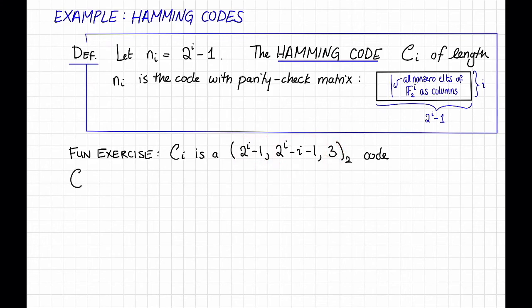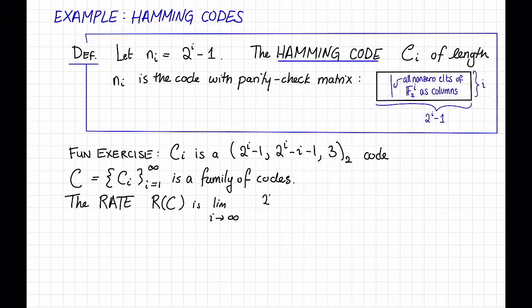That is, it has block length 2^i - 1, dimension 2^i - i - 1, and distance 3. This means that C, the collection of all of these C_i's, is a family of codes, according to the previous definition. The rate of this family is the limit as i goes to infinity of the rate of the i-th code, that's (2^i - i - 1) / 2^i, and as i goes to infinity, that approaches 1. That's pretty cool. 1 is a pretty good rate.